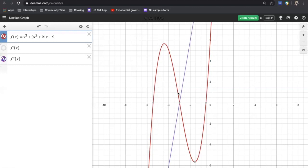When my original function is concave down, the second derivative is negative. At the point in which it changes concavity, my second derivative is zero. When the original function is concave up, the second derivative is positive.